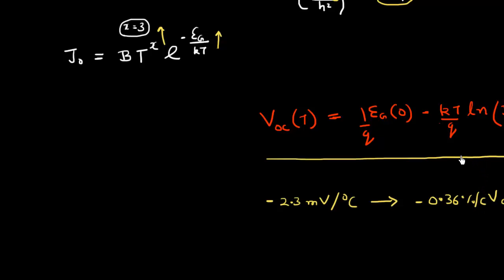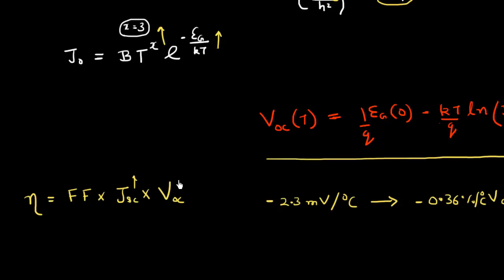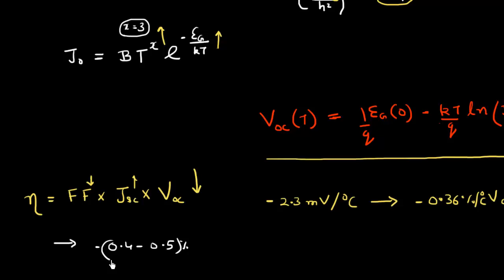Now thinking about efficiency in terms of fill factor, JSC, and VOC: my VOC is decreasing by 0.36% per degree, my JSC is not rising nearly as fast as VOC is degrading, and the fill factor also degrades as I increase temperature. So overall, my efficiency goes down as I increase the temperature. For monocrystalline or multicrystalline silicon solar cells, efficiency decreases by approximately 0.4 to 0.5% for every degree increase in temperature.